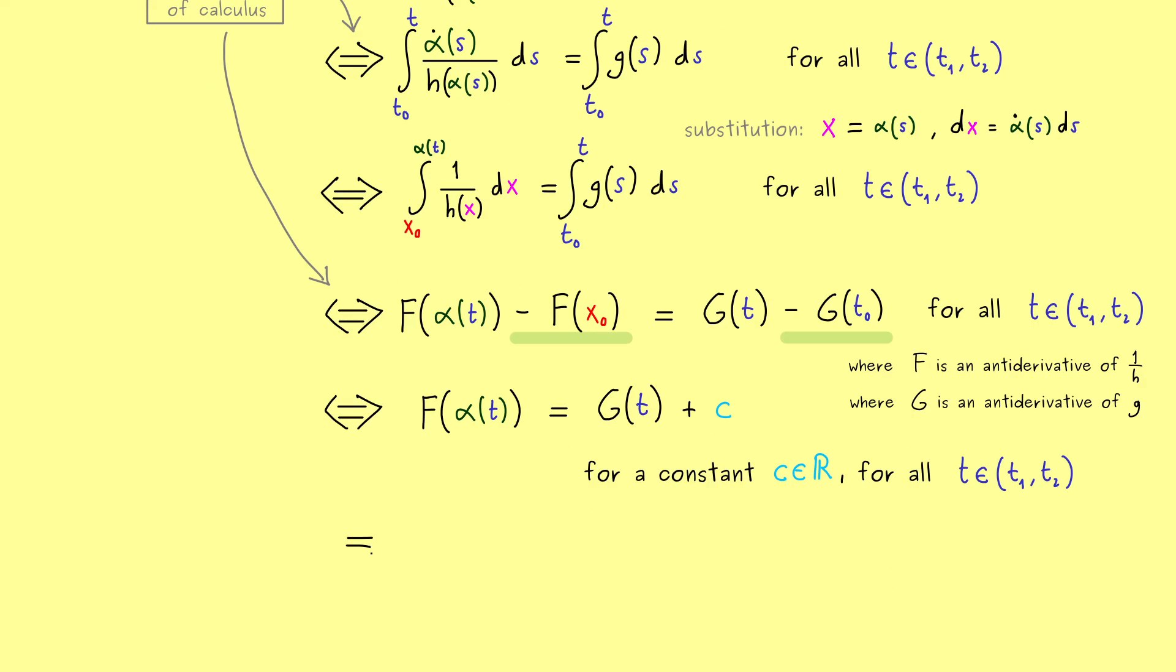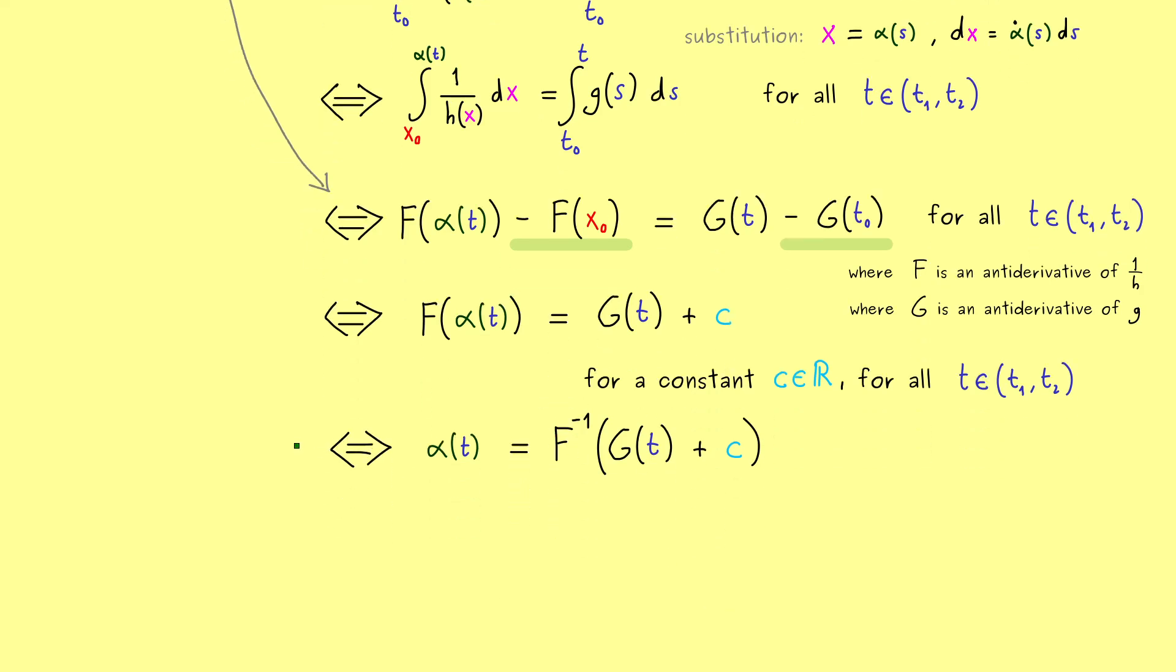In this equation here c could be any real number. With that you see we have solved the problem. We simply have to take the inverse of F now, because then we have alpha of t on the left-hand side. Maybe it looks a little bit complicated, but what you should recognize is that the whole procedure here gives us the solution alpha of t. This is the method of separating variables.